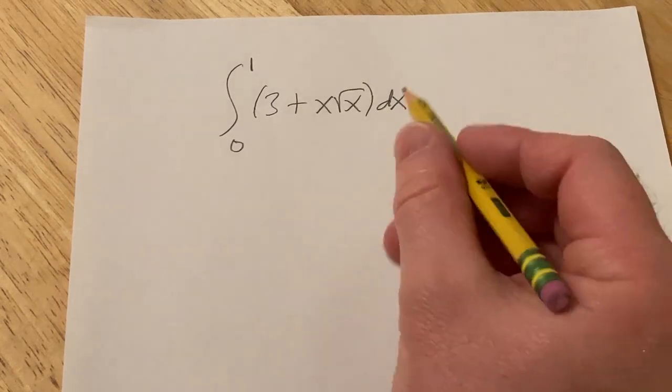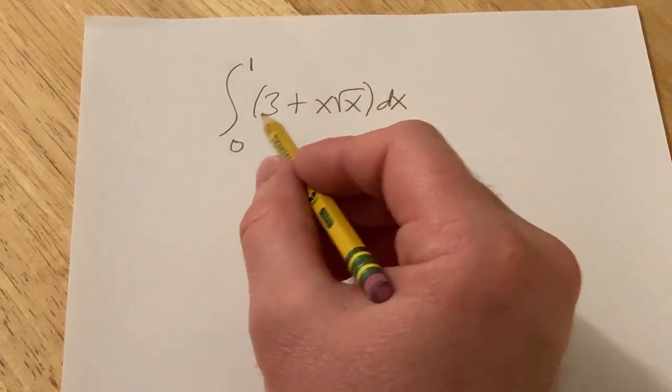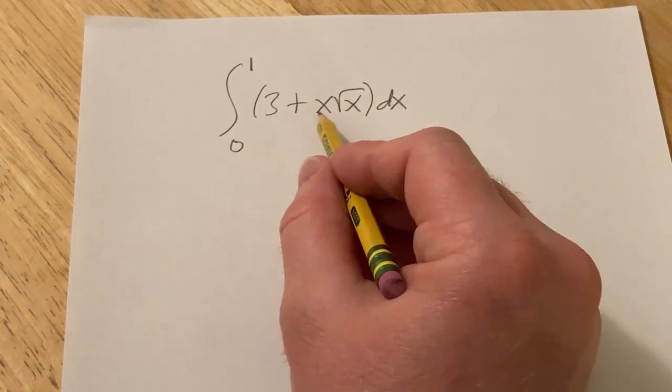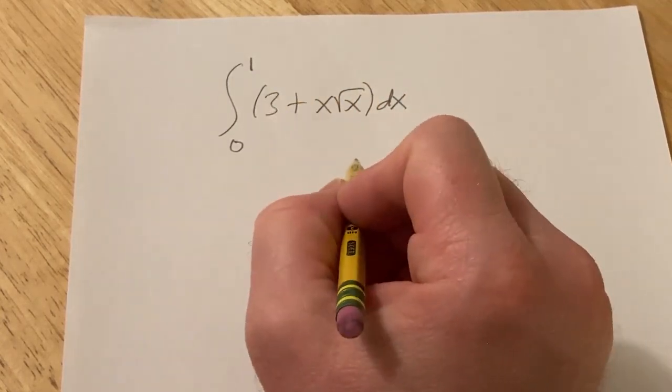Hi, in this problem we're going to work out this definite integral. We have to integrate 3 plus x times the square root of x from 0 to 1.